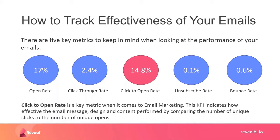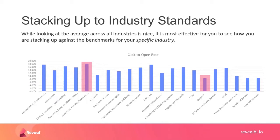The click-to-open rate tells you how many people clicked after they opened an email. I read an article that said the goal is 30%, but it never explained where that number came from — it was entirely generic. The point is that all of these metrics are specific to your vertical industry. Your unsubscribe rate might be 0.1% while someone else's is much higher depending on their industry. The key metric is the click-to-open rate, and you need to examine it across your vertical to understand where your industry fits.